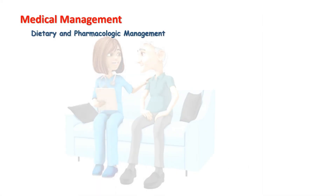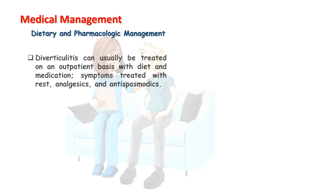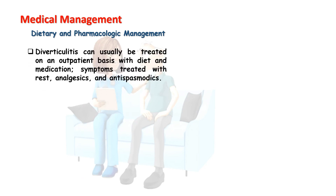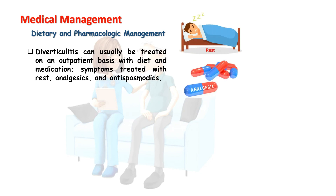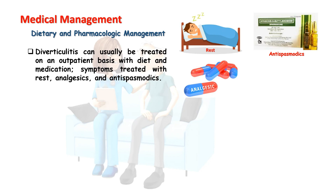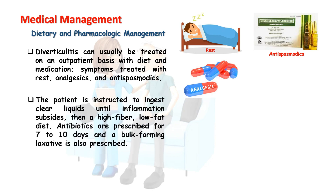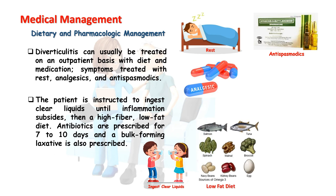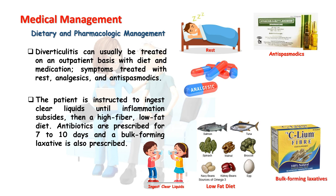Medical management — dietary and pharmacologic management: Diverticulitis can usually be treated on an outpatient basis with diet and medication. Symptoms are treated with rest, analgesics, and antispasmodics. The patient is instructed to ingest clear liquids until inflammation subsides, then a high-fiber, low-fat diet. Antibiotics are prescribed for 7 to 10 days and a bulk-forming laxative is also prescribed.